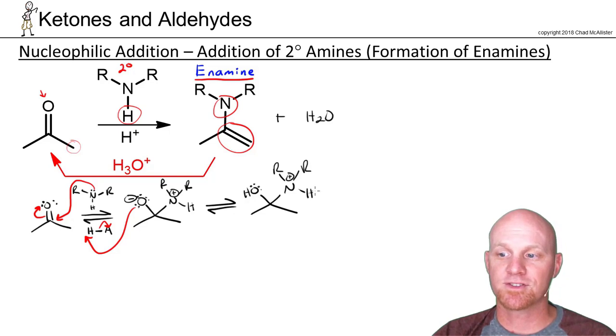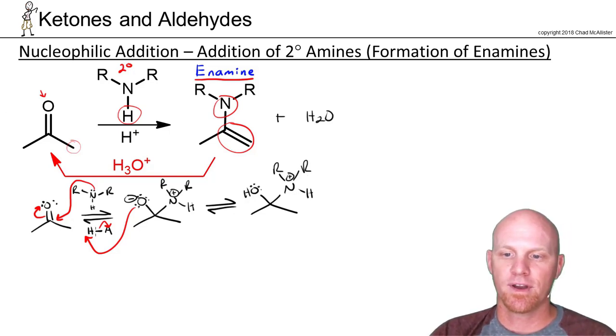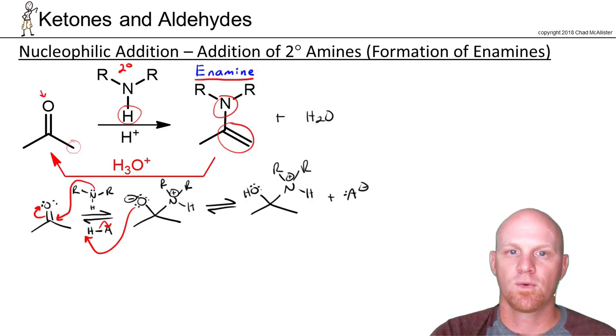And that leaves the most reactive part of this molecule being this quaternary ammonium, which is a weak acid. So we'll deprotonate, and then we also created our conjugate base A minus, which is what's going to act as the base here to deprotonate.